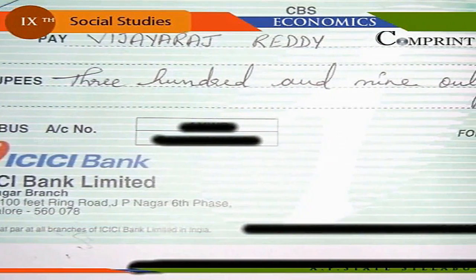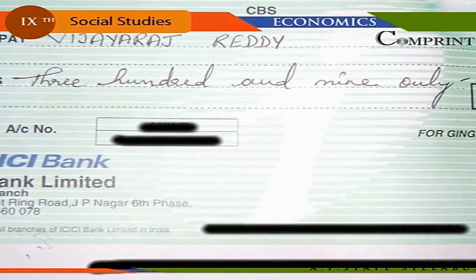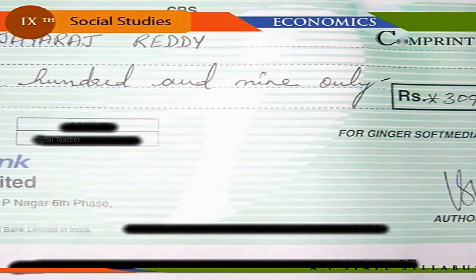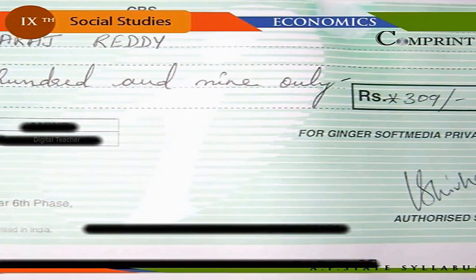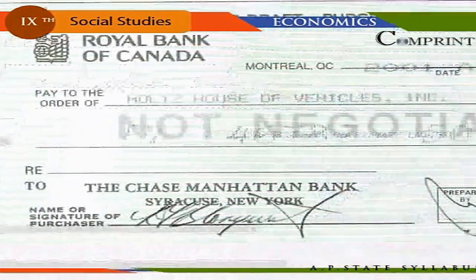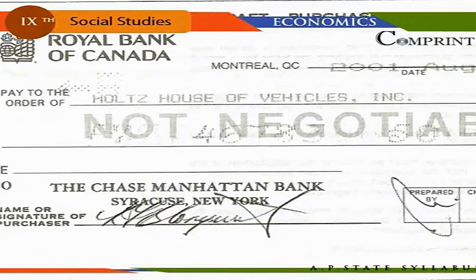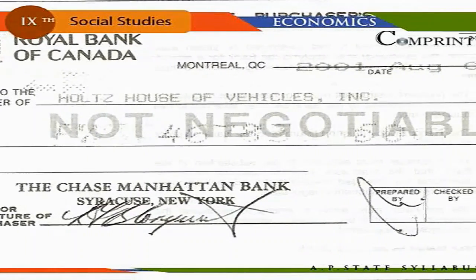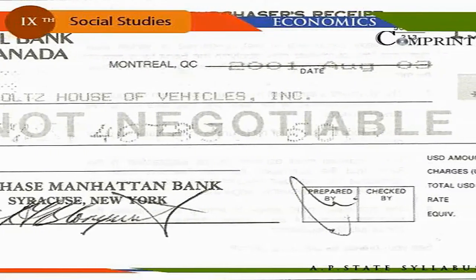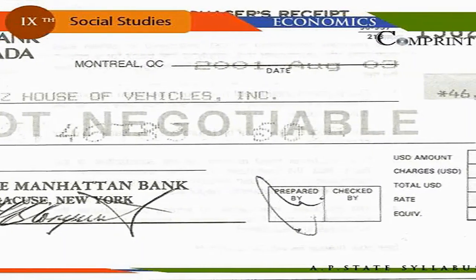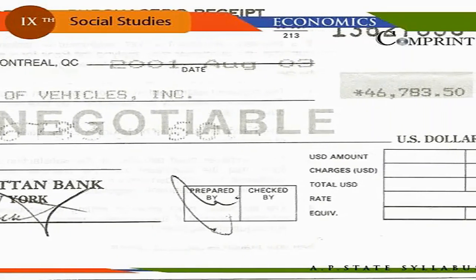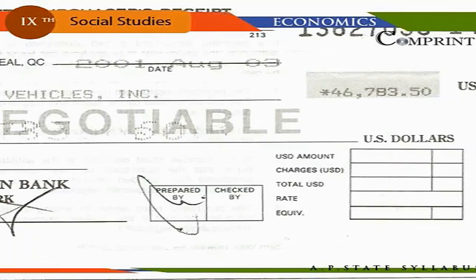Check. A check is an order issued by a depositor to a bank to pay a certain amount to the person specified against the deposits. Checks will be honored only if the depositor has sufficient money in his account. Drafts are issued by banks after receiving the money and the necessary commission. Drafts are preferable to checks as payments are set in time and the amount is prepaid by the party.